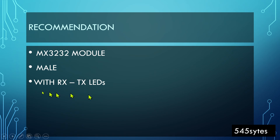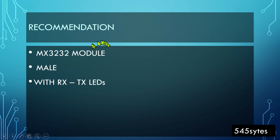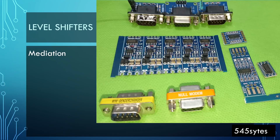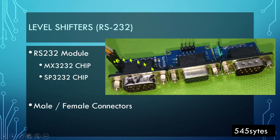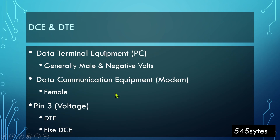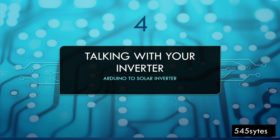My recommendation is to get an MX3232 module with a male DB9 connector that also has RX and TX LEDs on it. I will share why the LEDs are important in my next videos, because they really help in resolving issues while communicating. So the recommendation is: get an MX3232 module — not a level shifter — with a male DB9 and RX/TX LEDs. I think that is all for now; let's meet in the next video.